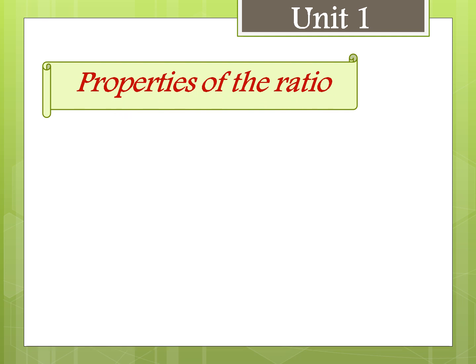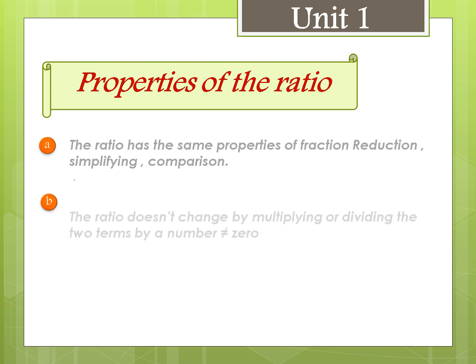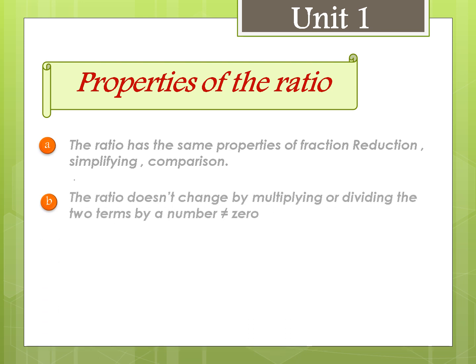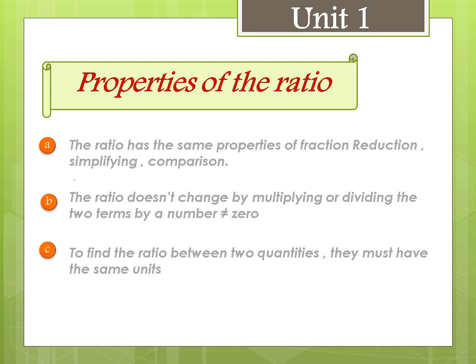Properties of the Ratio. (a) The ratio has the same properties as a fraction: reduction, simplifying, and conversion. (b) The ratio doesn't change by multiplying or dividing the two terms by a number not equal to zero. (c) To find the ratio between two quantities, we must have the same units. (d) The ratio between two quantities has no units.